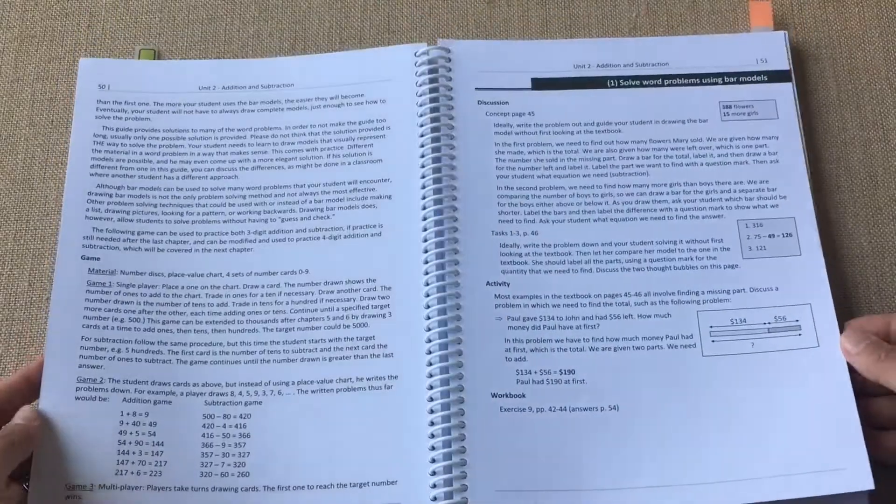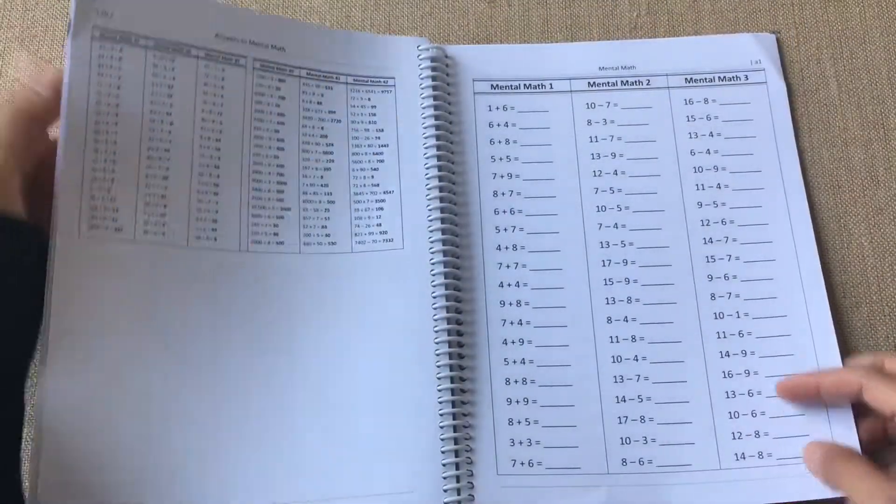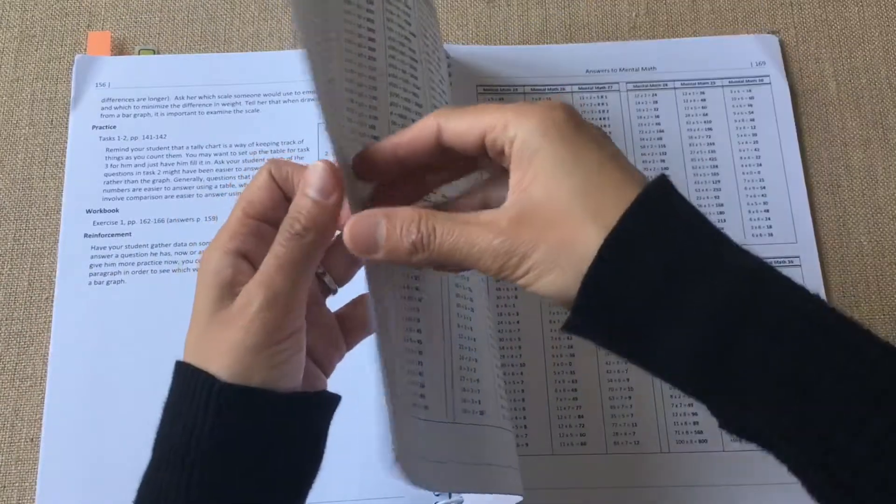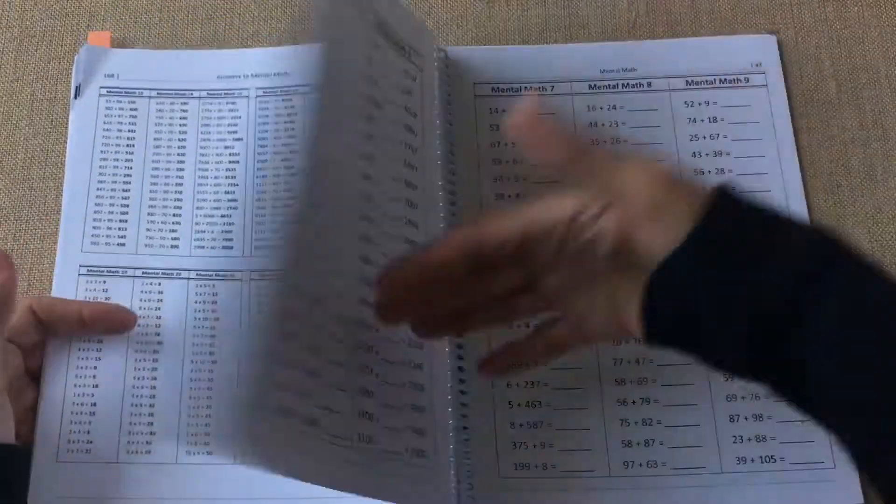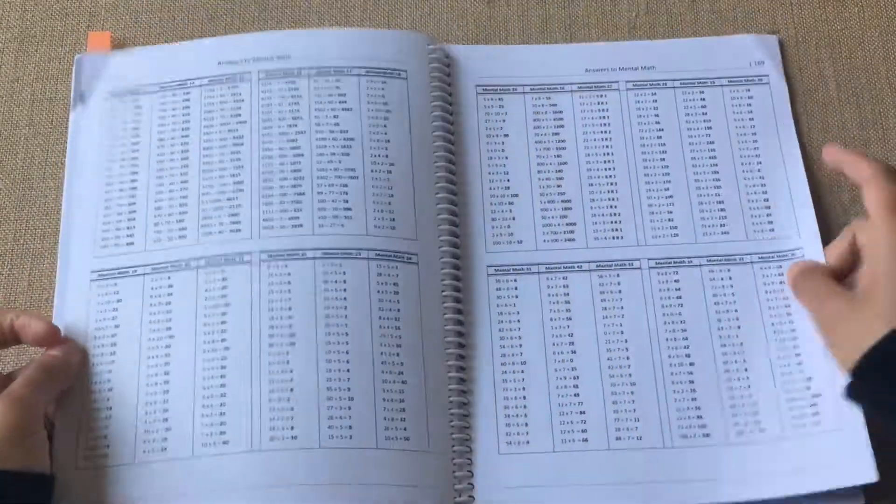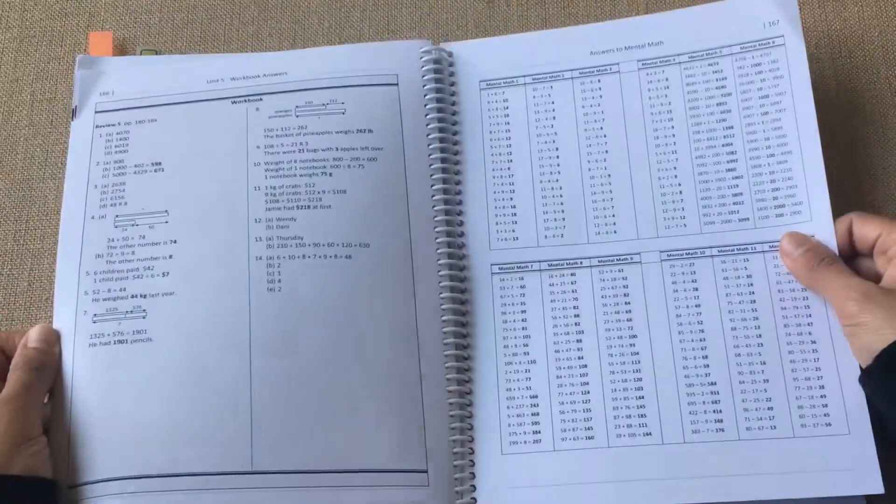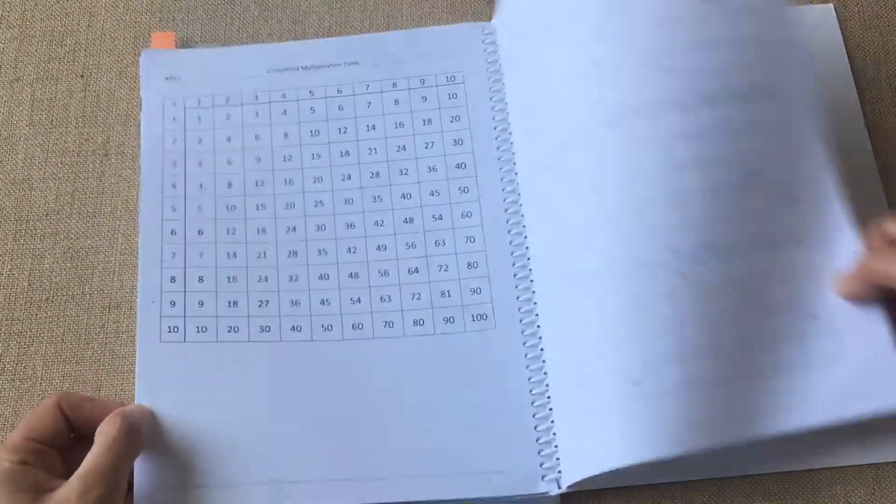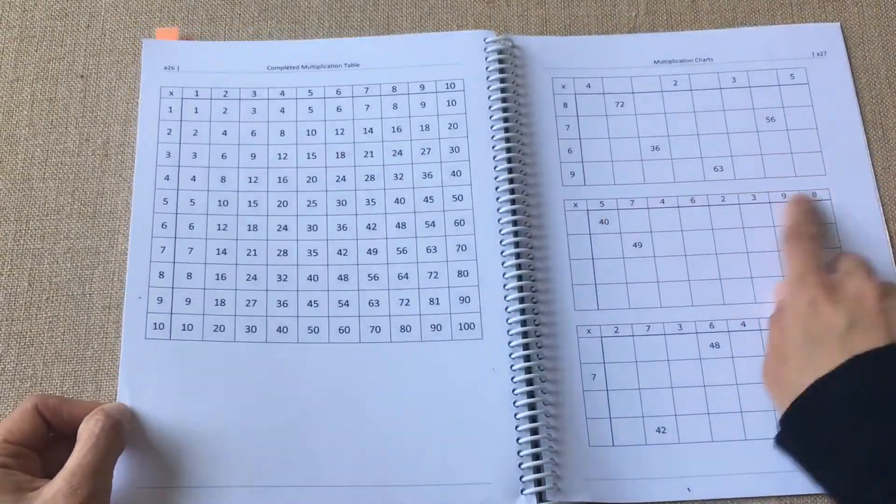They also have answers to the mental math pages so when you're doing it orally with your child, you don't have to look at the questions, you can just look from here and help quickly check it.